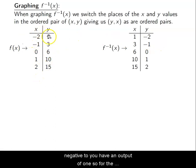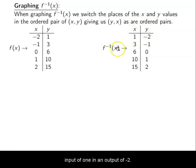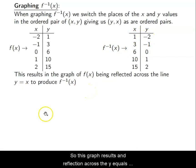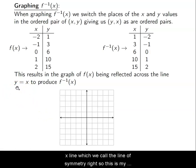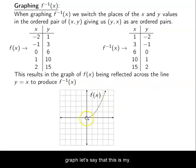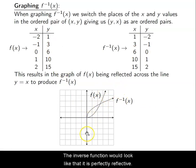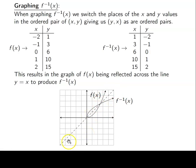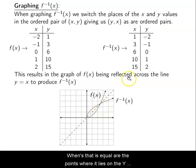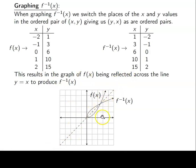So negative 2 used to have an output of 1; for the inverse, I have an input of 1 and an output of negative 2. This results in a reflection across the line y = x, which we call the line of symmetry. The inverse function is perfectly reflected across y = x. The points where the function and its inverse are equal are the points that lie on the y = x line, because when x and y are equal, swapping them gives you the same point.